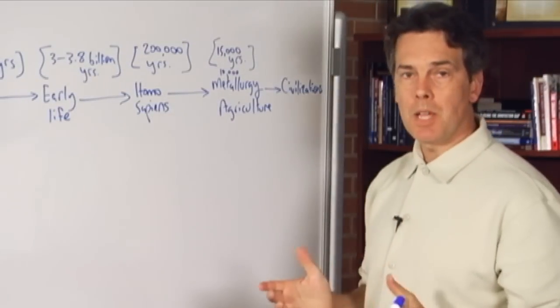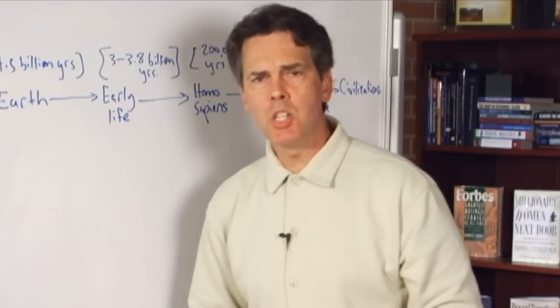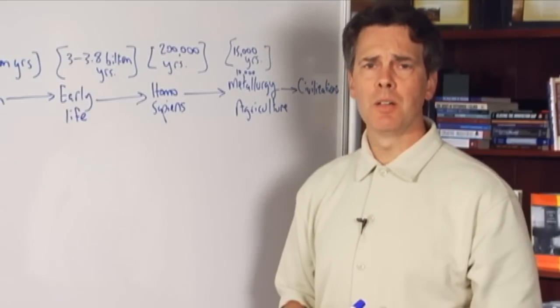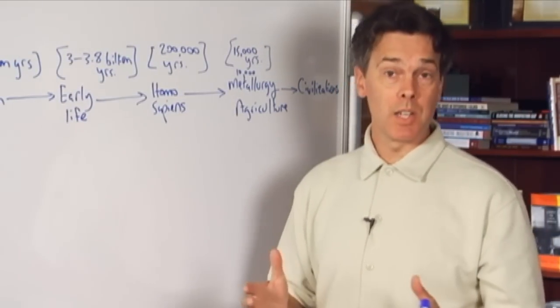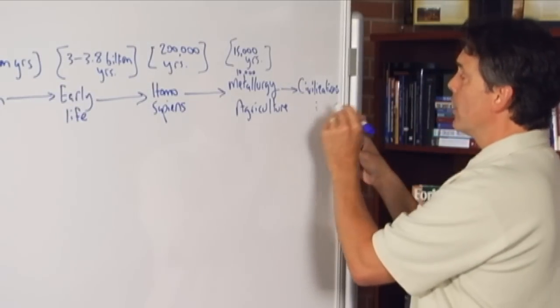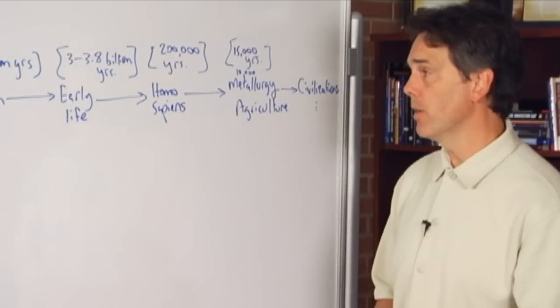First in the Mesopotamian river valley, Egypt, further east in India, even further east in China. Then coming back to the west, the development of civilizations in Greece and Rome. And then on, dot, dot, dot, to contemporary times.